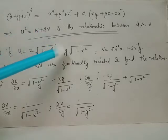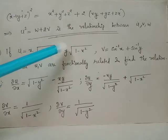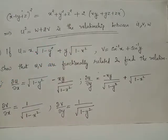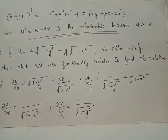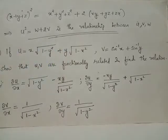This is because y remains constant, and when we take the derivative of root of 1 minus x squared, it becomes 1 over 2 times root of 1 minus x squared, with the derivative of negative x squared appearing in the numerator. The derivative of negative x squared equals negative 2x. The 2s cancel, giving negative xy over root of 1 minus x squared.